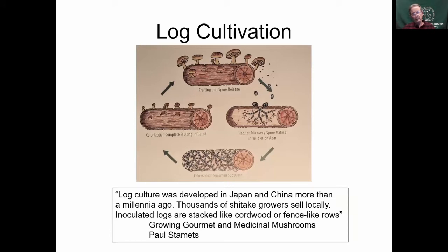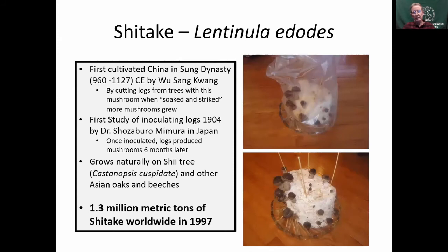Independently, morel cultivation comes to us from China and Japan. From Paul Stamets' book Growing Gourmet and Medicinal Mushrooms, official cultivation starts with the Song Dynasty around 1000 CE, where they would cut logs — the mushrooms are called shiitake. The study of inoculation started there in 1904, the beginning of the modern era. Shiitake are named because they grow on the shii tree; 'take' means mushroom in Japanese.